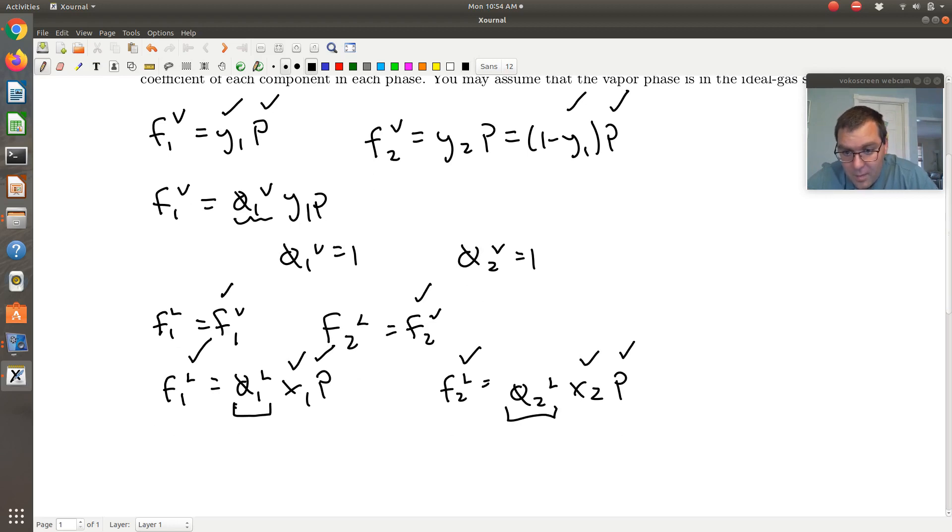So if I solve for phi1L, phi1L is equal to F1L over X1P, where F1L is equal to F1V, which is just equal to Y1P.